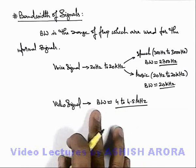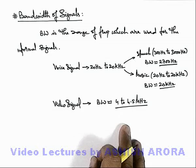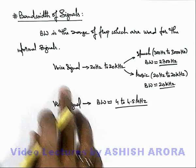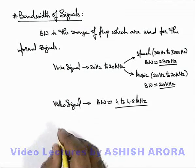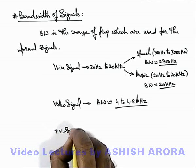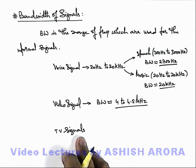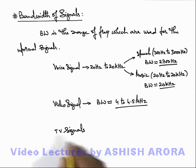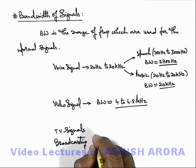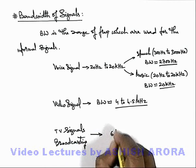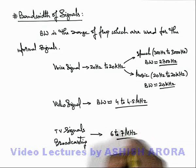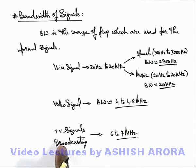Transmission frequencies depend on the type of channel used for transmission, which we'll study in coming sections. Here we are talking about the bandwidth of signals only. Similarly, when we talk about TV signals — that is, video signals transmitted over broadcasting stations — the TV signal broadcasting frequencies are in the range of 6 to 7 MHz. These are the frequencies used by various television stations for broadcasting of television signals.